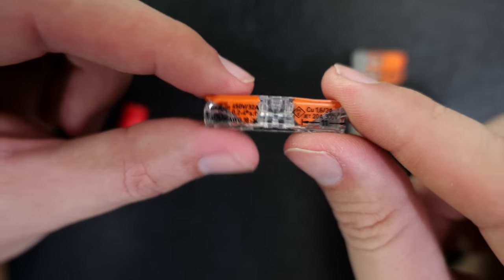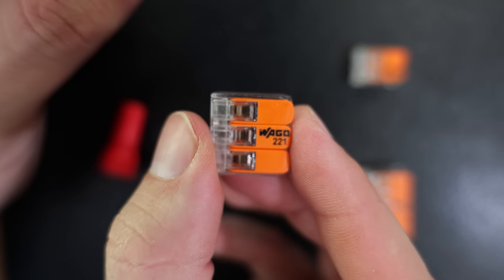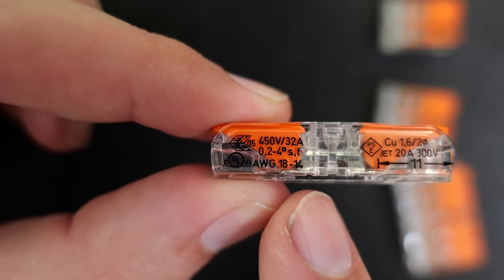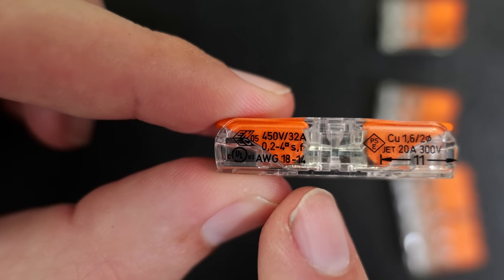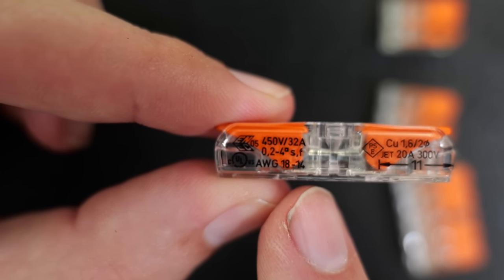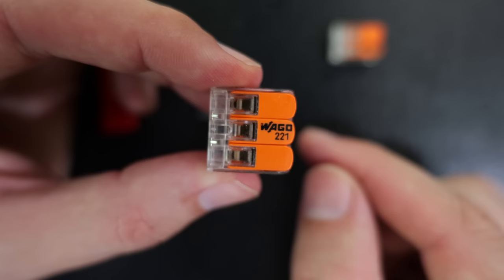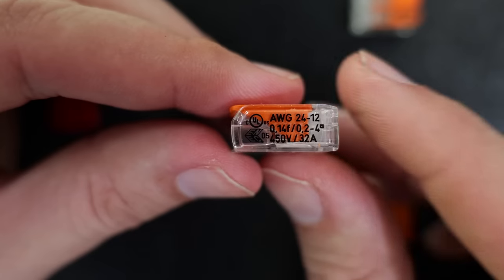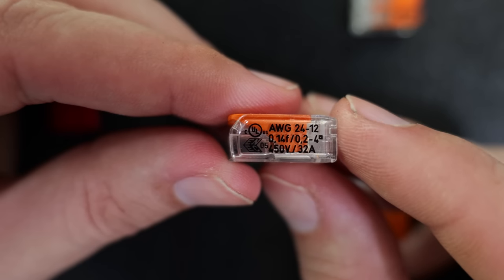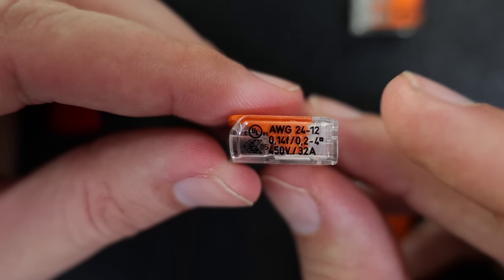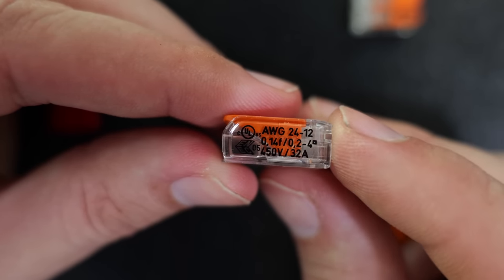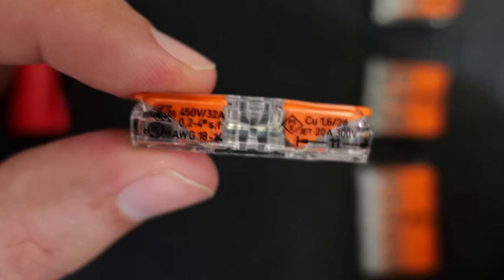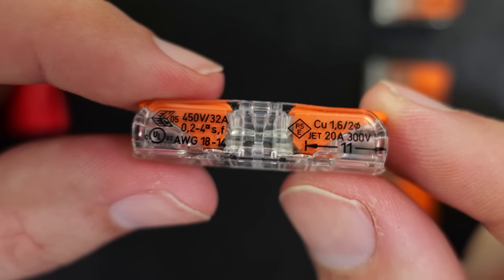Now, another area where these do differ from the original WAGO 221 connectors. If we flip the inline connector over to the side, we will see here where it says that this is capable of handling 18 to 14 gauge wire. Whereas if we look at the side of one of these original WAGO 221 connectors, we will see it says it is capable of handling wires of 24 gauge all the way up to 12 gauge. Apart from that, they're pretty much identical in what they can handle. It's really just the wiring size where they differ.